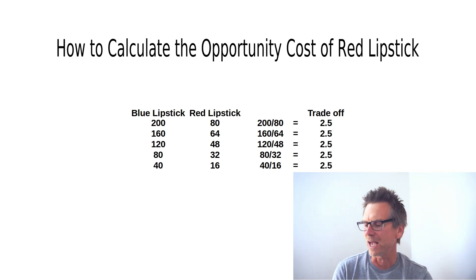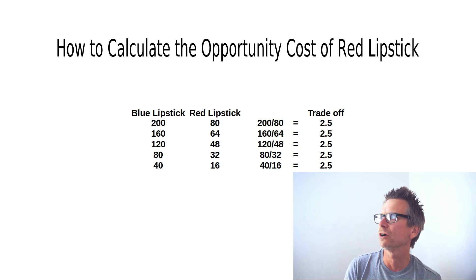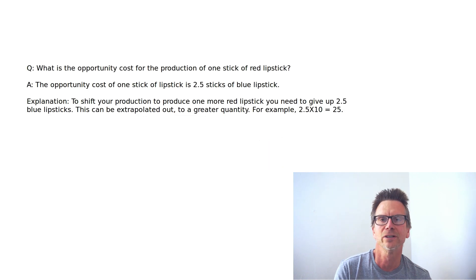There we have it. We have the calculation. It's clear. It's simple division, no math, just division. The question is what is the opportunity cost for the production of one stick of red lipstick? The opportunity cost of one stick of red lipstick is 2.5 blue lipsticks. That's the answer.